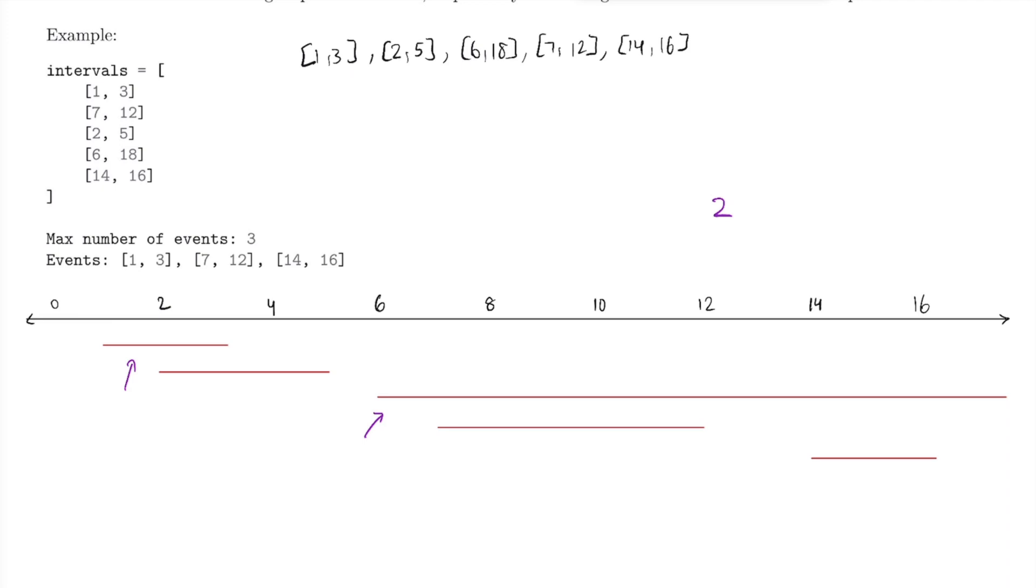So let's perform this new greedy algorithm. So we can remove this existing list that we have, and we can begin by sorting by second value. So our list becomes (1,3), (2,5), and then here's where it changes: (7,12), (14,16), and (6,18). And we can see here that instead of having the (6,18) in the middle, we're actually putting that at the end, because it ends way later than the rest of these events.